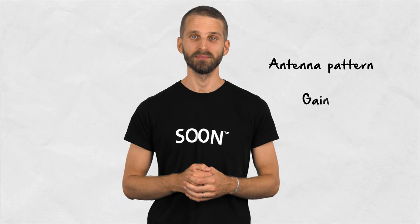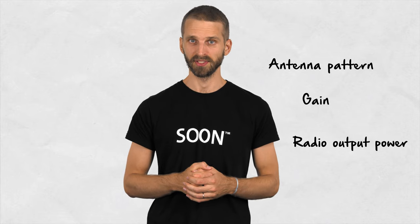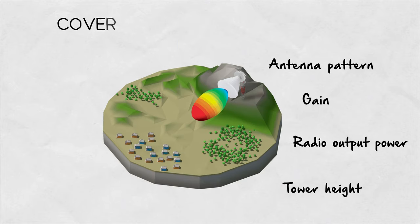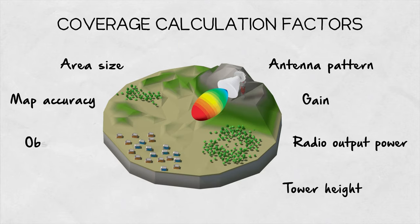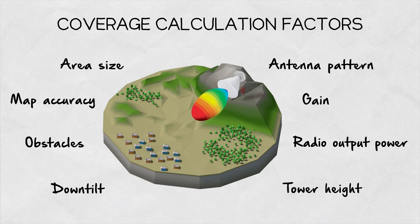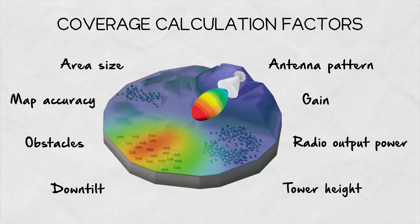The truth is, there are a handful of parameters that are needed for precise coverage prediction: antenna radiation pattern, its gain, radio output power, and accurate map data. With this, it is possible to obtain what coverage truly is — a continuous image of signal strength in an area.